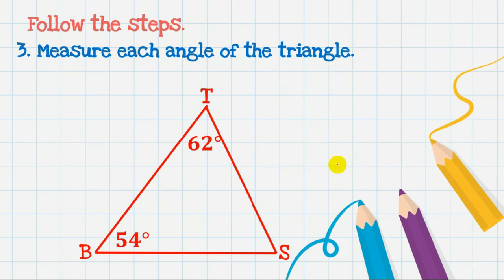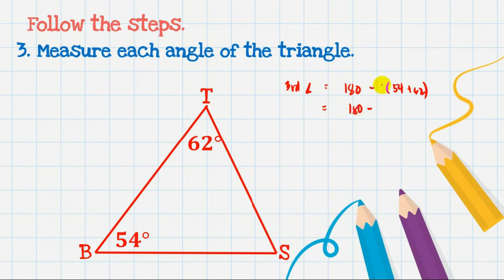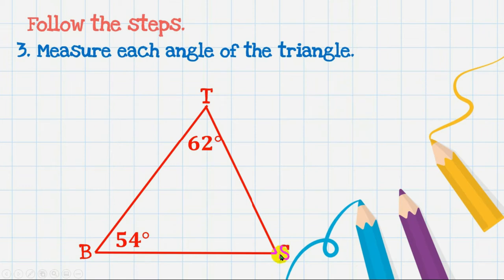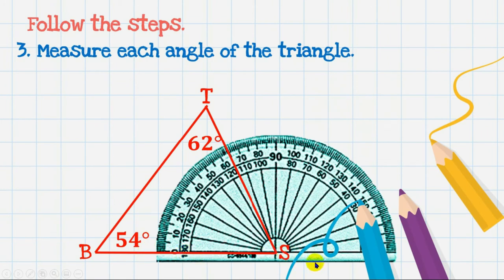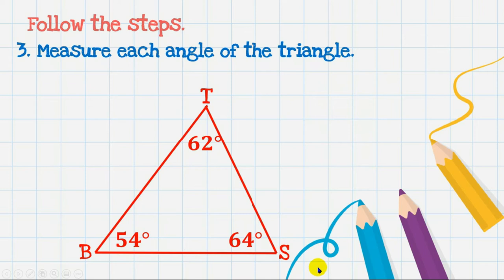For the third angle, we don't need the protractor. To find the measurement of angle S, add the two known angles: 54 plus 62 equals 116, then subtract from 180. 180 minus 116 equals 64 degrees. So angle S is 64 degrees. It's safer to solve the third angle algebraically so the interior angles total exactly 180 degrees.